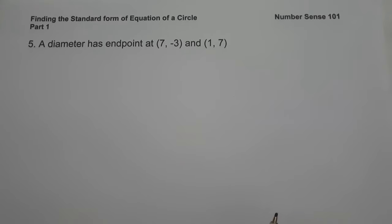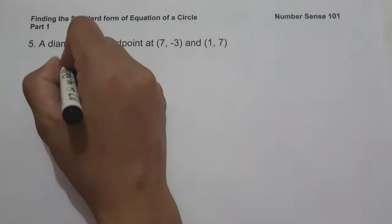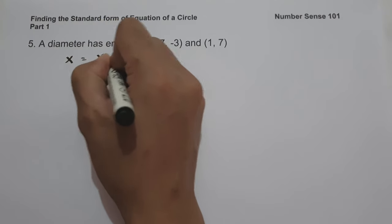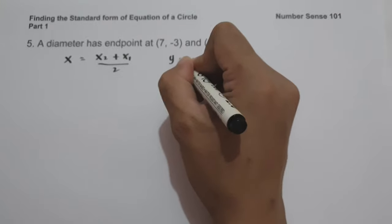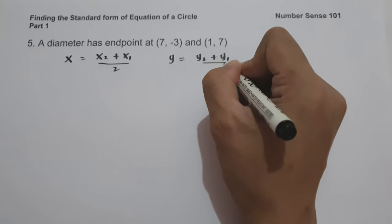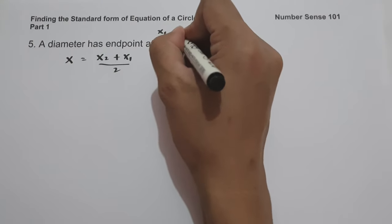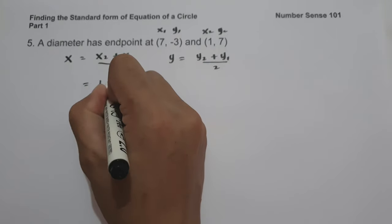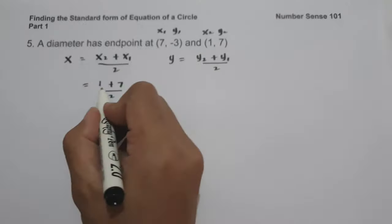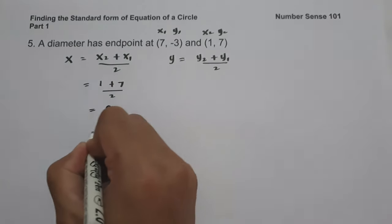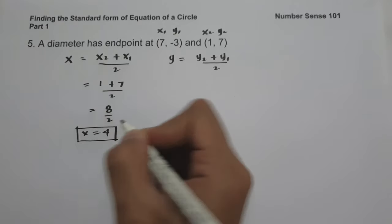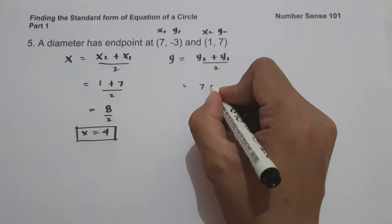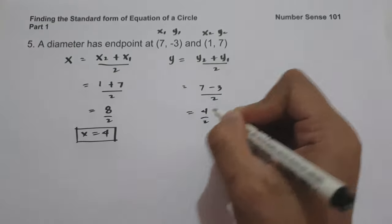On example number five, a diameter has endpoints at (7, negative 3) and (1, 7). Since the diameter intersects the center, we use the midpoint formula to find the center: midpoint of x equals (x₁ plus x₂) all over 2, and midpoint of y equals (y₁ plus y₂) all over 2. The midpoint of x is (1 plus 7) over 2 equals 8 over 2 equals 4. The midpoint of y is (7 plus negative 3) over 2 equals 4 over 2 equals 2.